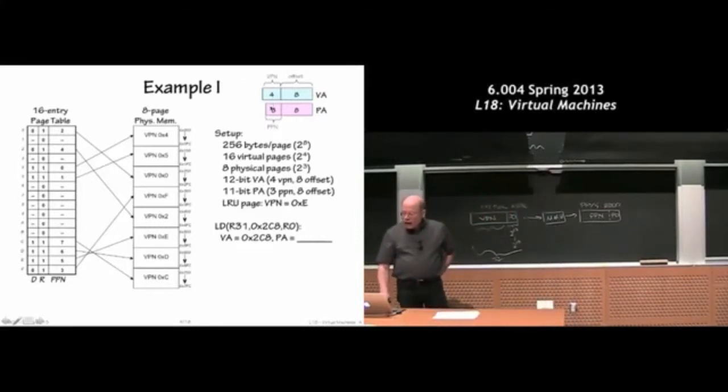And then we have a 12-bit virtual address and an 11-bit physical address. So we have 4 bits of virtual page number, so 2 to the 16th virtual pages. And 3 bits of physical page number, so we only have 2 to the 3rd or 8 physical pages. So here's the entire page map. And how many entries are there in the page map? We need one for each virtual page, so there's 2 to the 4th virtual pages. So we have 16 entries here.